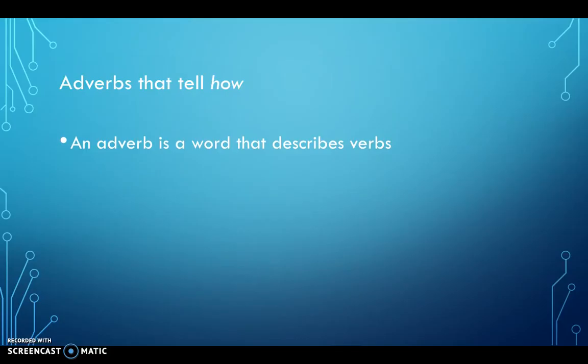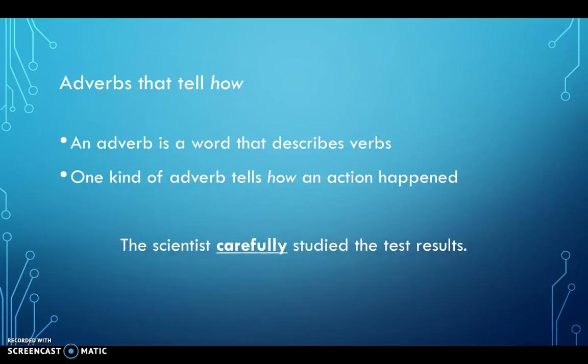An adverb is a word that describes verbs. Just like an adjective is a word that describes nouns, an adverb describes verbs. One kind of adverb tells how an action happened. So the scientist carefully studied the test results. The word carefully is an adverb in that sentence because it's describing how the scientist studied the test results.